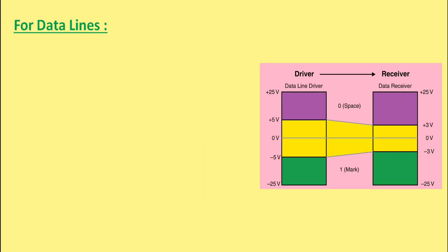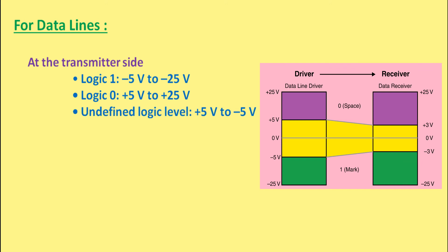When it is about data, in the RS232 or EIA 232 standard at the transmitter side, minus 5V to minus 25V is considered as logic 1, plus 5V to plus 25V is considered as logic 0.